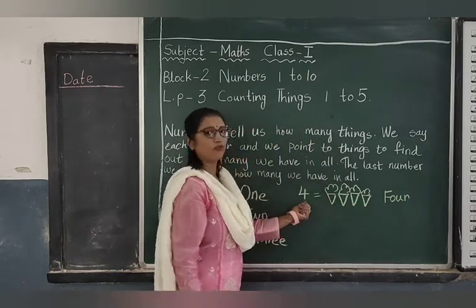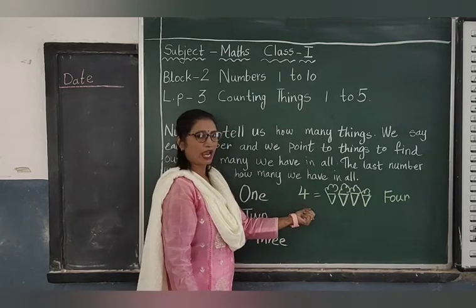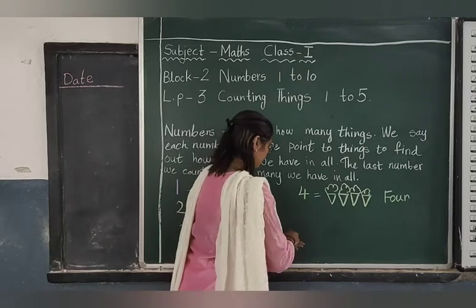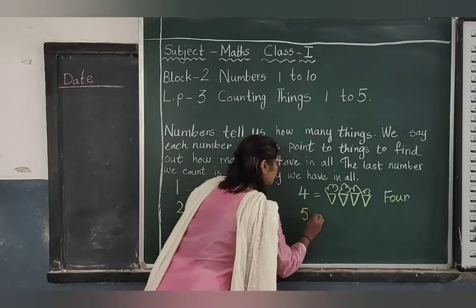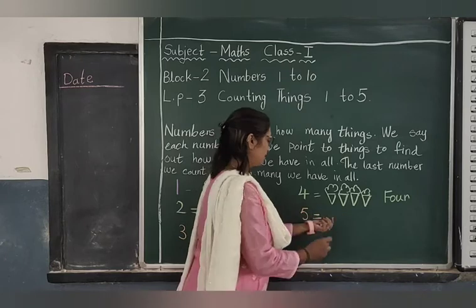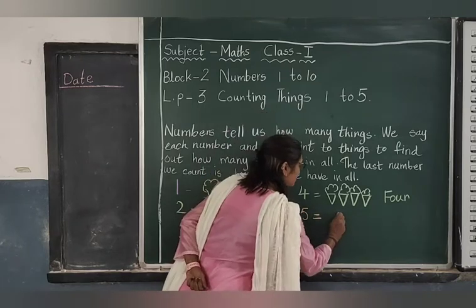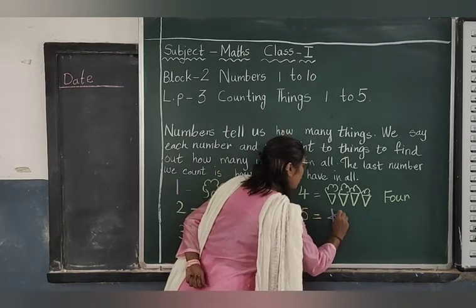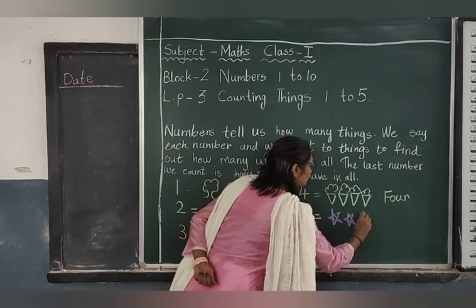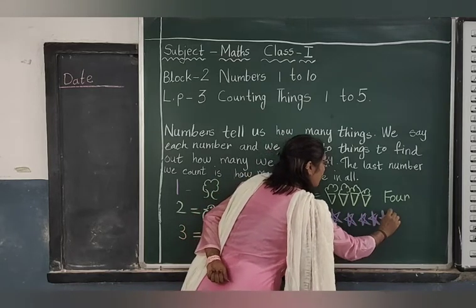After 4, which number will come, children? 5. So I have to write number 5, and I should draw 5 pictures. So 5 pictures means I will draw 5 stars. 1, 2, 3, 4, and 5.